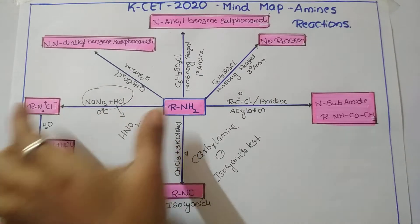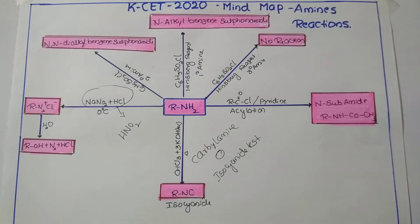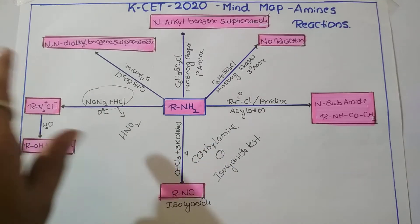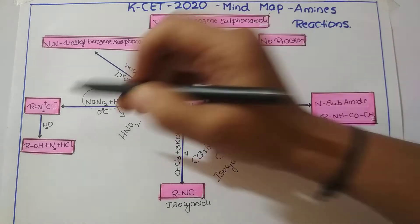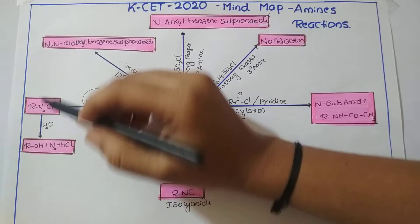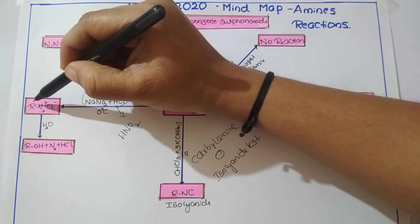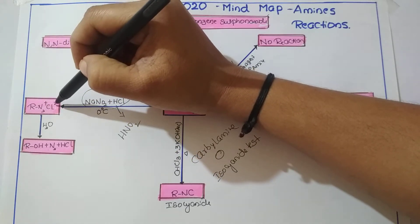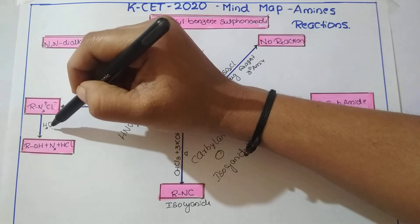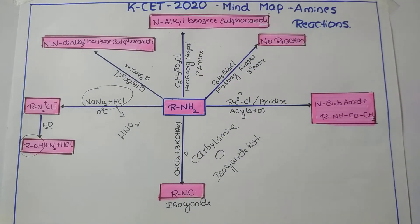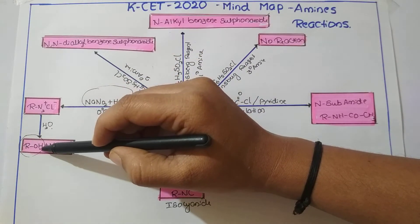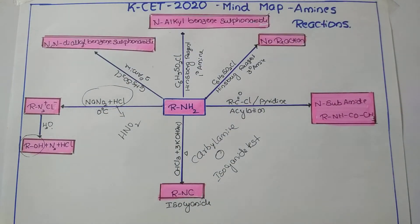This process is known as the diazotization reaction. We can prepare both aliphatic and aromatic diazonium salts this way. Importantly, whenever the alkyl or aryl diazonium salt is hydrolyzed or treated with water, we get the respective alcohol with liberation of nitrogen gas.